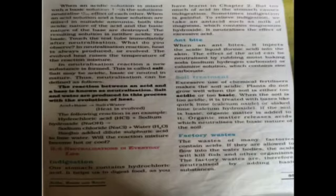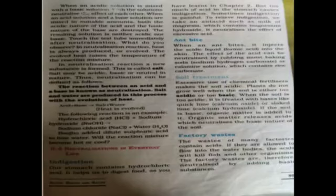Next is ant bite. When an ant bites, it injects formic acid into the skin, causing an itchy feeling. To treat it, apply baking soda — which contains sodium hydrogen carbonate — on the skin. This base neutralizes the effect of formic acid. We can also use calamine solution.